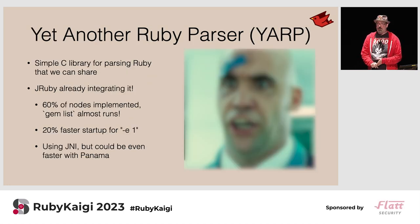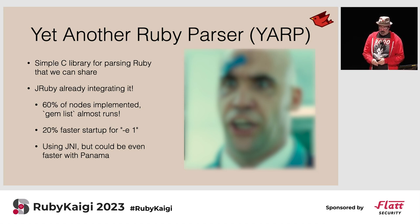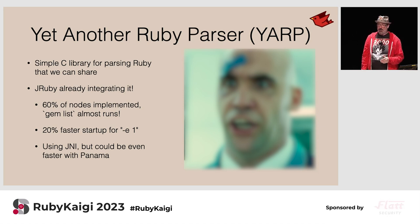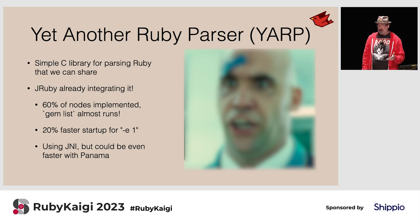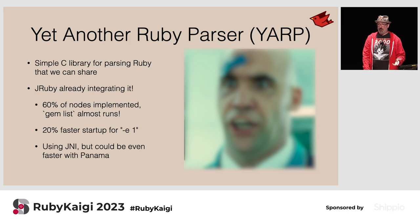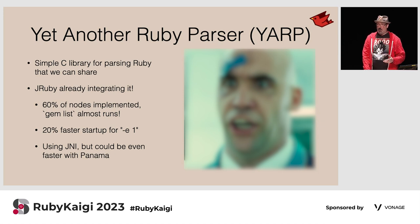We're also working on integrating YARP — Yet Another Ruby Parser — the project that's been discussed here. Tom said about 60% of the AST nodes are already implemented and hooked up to JRuby. In our early tests it's about 20% faster than starting up our own parser. Right now we're using JNI, but this is another case where Panama would be great — we just point it at the YARP library, generate some code, and access it more quickly.